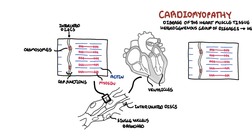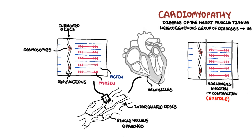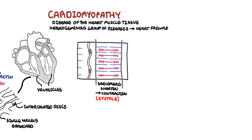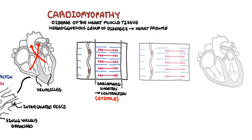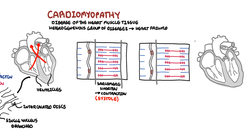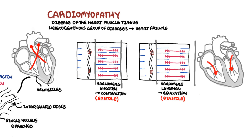The sarcomere shortens during muscle contraction — this is called systole, when the ventricles contract and pump blood out. The sarcomere then lengthens as the cardiac muscle cells relax, a process termed diastole. This is when the ventricles fill with blood, preparing for another contraction.